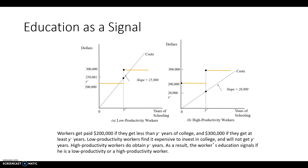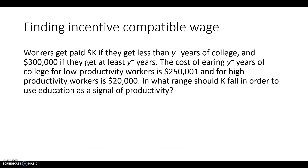The firm can then tell, using this signal of schooling, whether the workers are high productivity or low productivity. So how do you choose that wage structure? If you know you want to pay those high productivity workers $300,000, you need to think about where to set the wage for the low productivity workers so that low productivity people don't find it beneficial to finish college, allowing you to use Y-bar years of college as a signal of productivity.